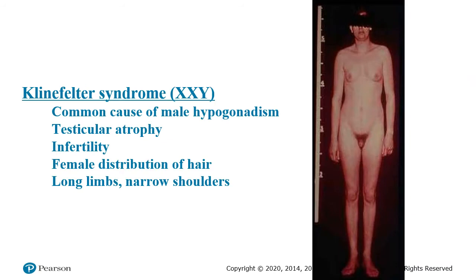Klinefelter's syndrome is similar but on the opposite end — it's an XY individual with an extra X, making them XXY. You get male hypogonadalism, where there will be atrophy of the testicles leading to infertility. Body hair is distributed like a female, they tend to have long limbs and narrower shoulders, and can have small breasts. A penis is present but small. Basically the body is trying to develop into both male and female and doesn't fully develop as a result.